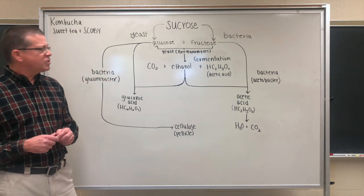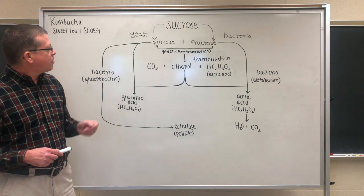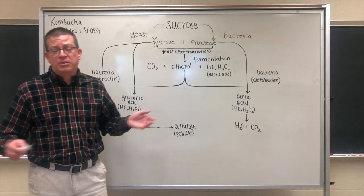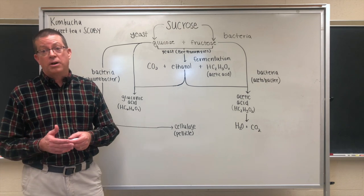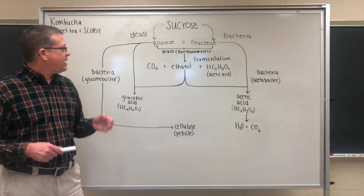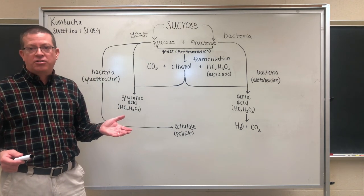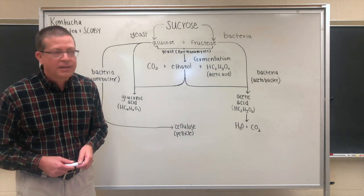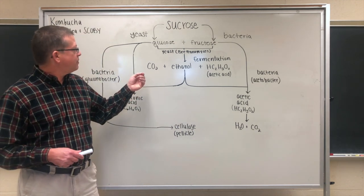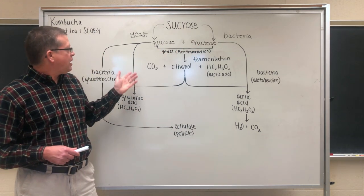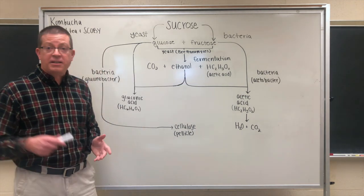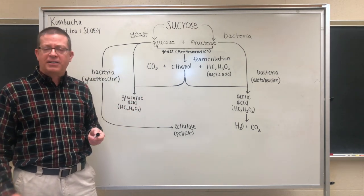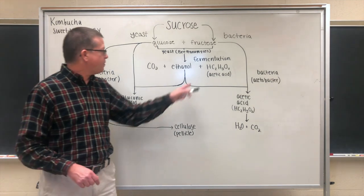Now let's talk about the actual yeast. The yeast found in the SCOBY is going to be a type called Brettanomyces, though other types of yeast can be found in SCOBYs as well. The yeast allows for a fermentation reaction to occur — pretty much the same fermentation reaction we would get in the production of beer, wine, or hard cider. The yeast will ferment the glucose and fructose in order to generate carbon dioxide gas, ethyl alcohol or ethanol, and acetic acid.